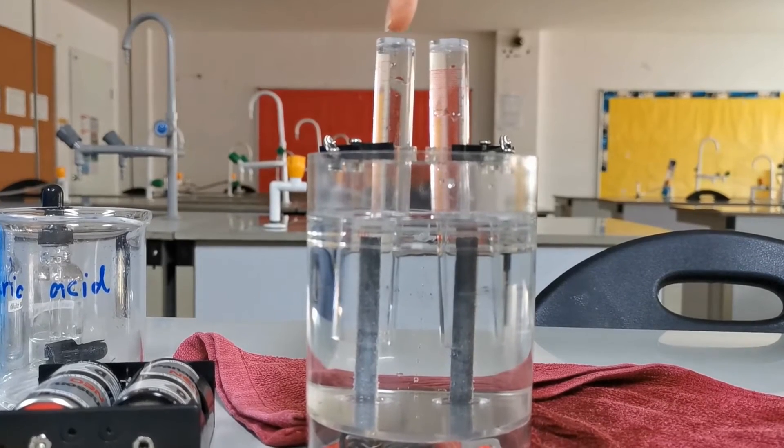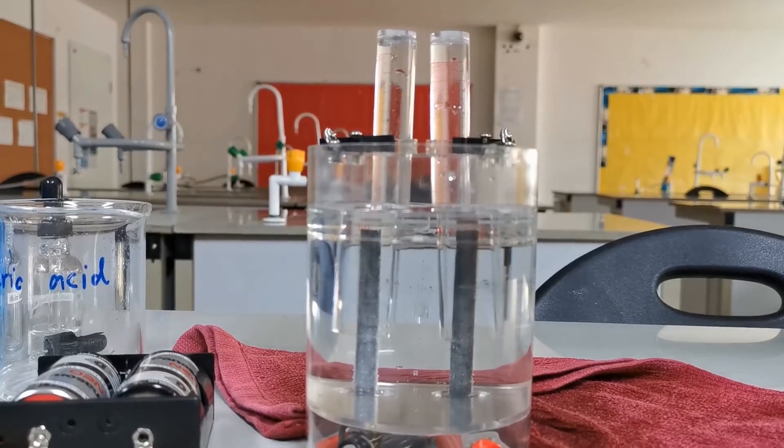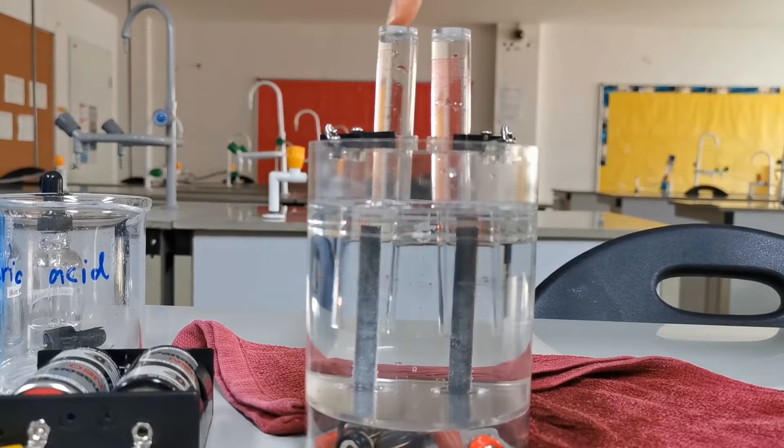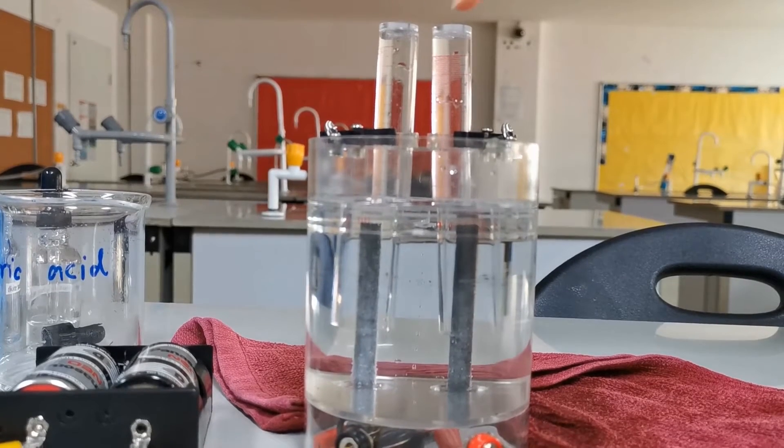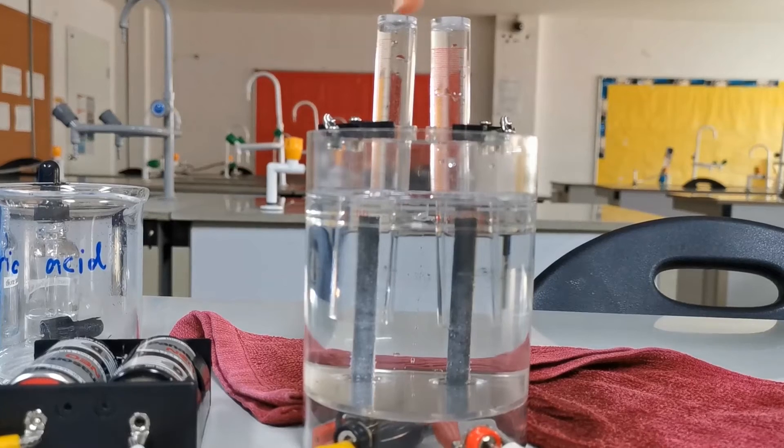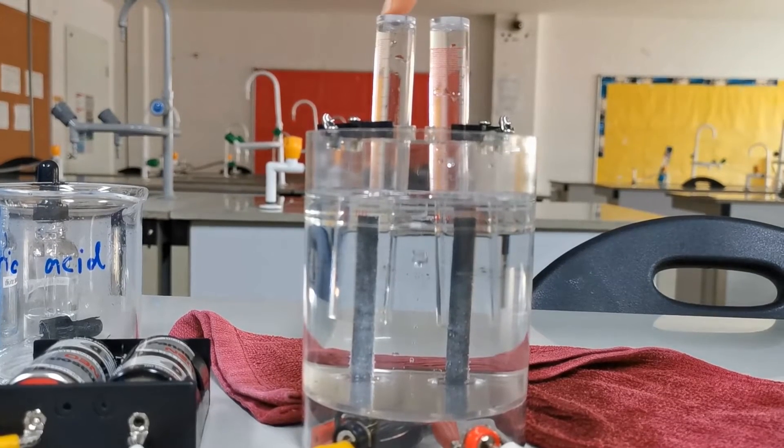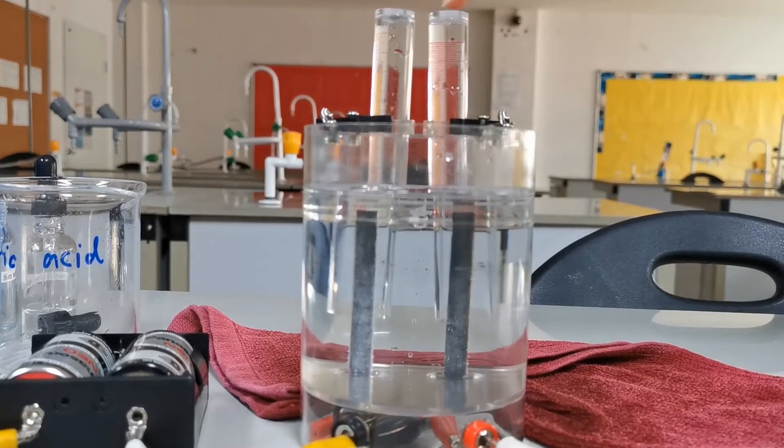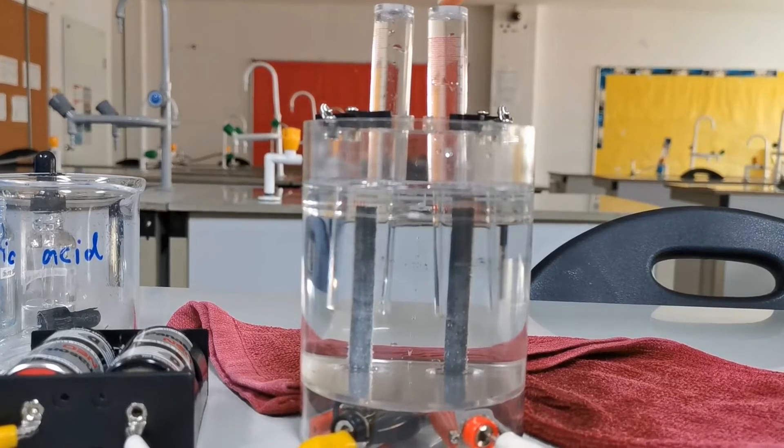This electrode here that's connected to the yellow wire is our cathode. You can see it produces more bubbles than our anode here. Cathode produces hydrogen and anode produces oxygen.